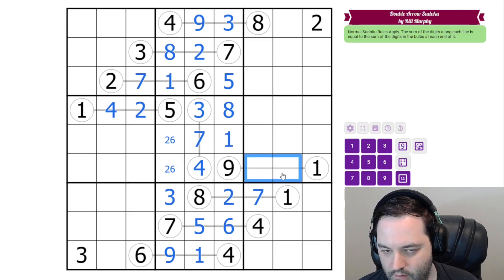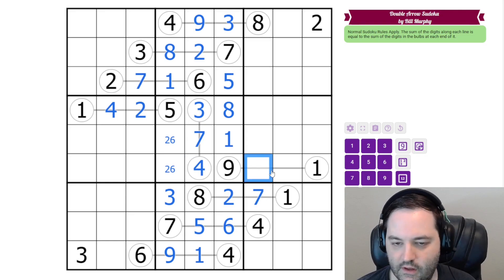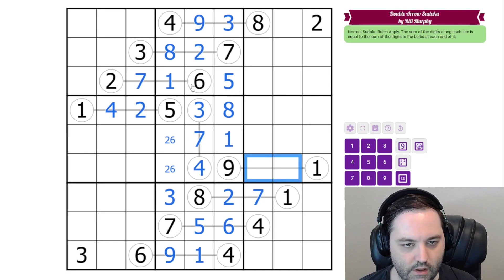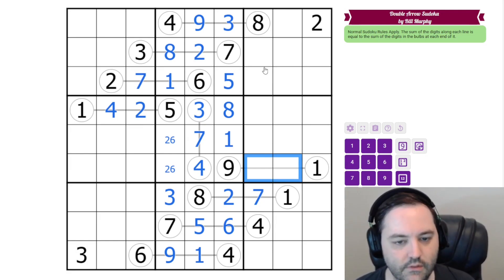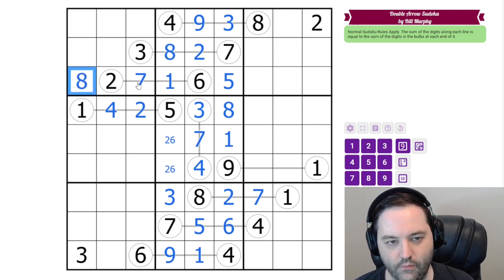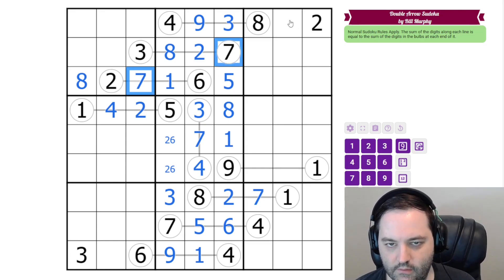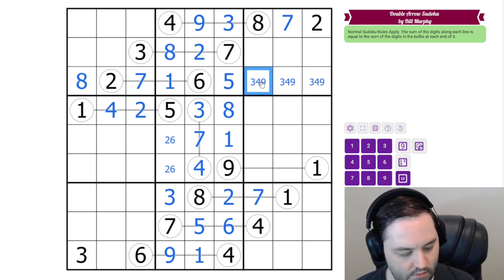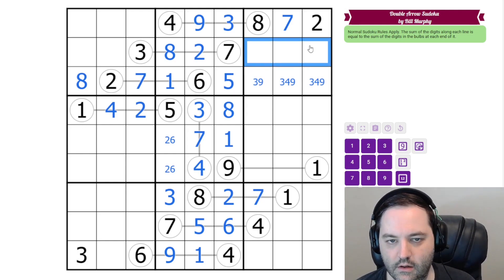So we're down to two possibilities here. We can't have 4, 6 now. We still can't determine the order. Let's look for some Sudoku. At the top, we have two 8s. We need an 8 in this box, and there's only one place left for it. We have two 7s. We need a 7 in this box, and there's only one place left for it. That's going to give us 3, 4, 9 here. And 1, 5, 6 are the remaining digits. We have 1s here.